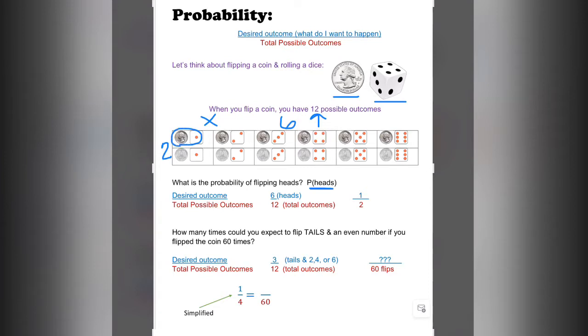Heads with a one, heads with a two, heads with a three, heads with a four, and so on. The probability of getting heads: I have six chances out of 12 total. We simplify that to get 1 over 2, or a 50-50 chance. So we have a 50-50 chance of getting heads and a 50-50 chance of getting tails.